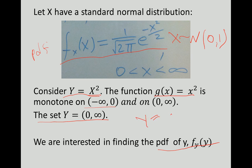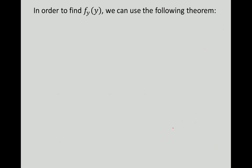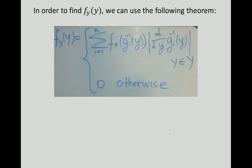Since y is a function of x, in order to find the PDF of y we can use the following theorem. We compute f of y as a summation over monotone intervals: it is a summation of f of x evaluated at the inverse of g of y, times the absolute value of the derivative of the inverse of g of y.